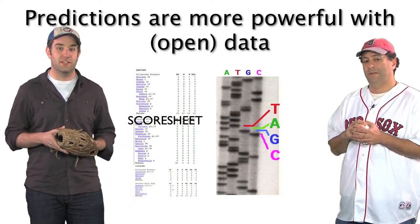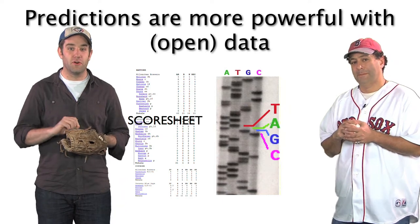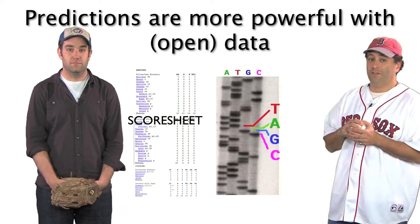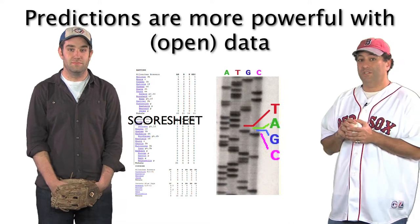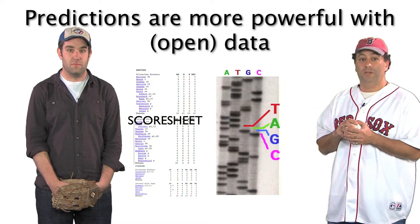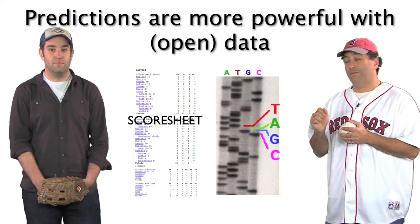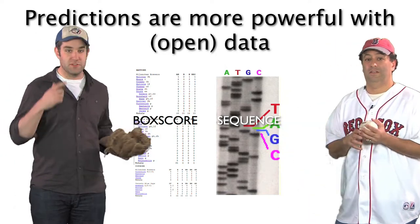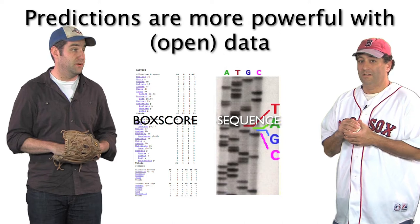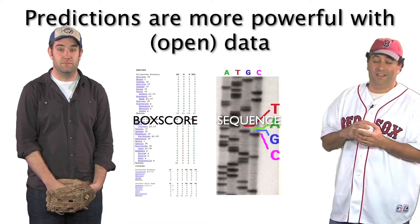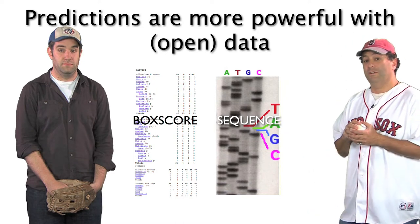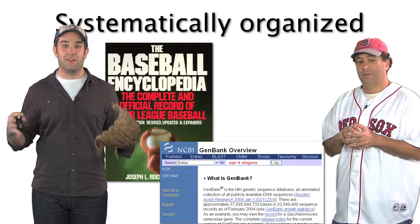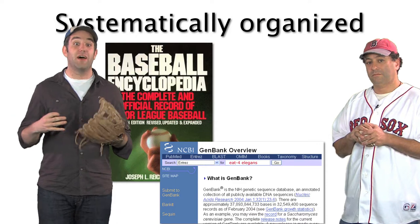Baseball statistics used to be collected at an individual game where people would just keep score on a score sheet. And DNA sequences were obtained by a cumbersome method where you took a piece of DNA, did a bunch of biochemistry, ran it out in a sequencing gel, and recorded the DNA sequence by writing it down on a single piece of paper. Eventually those results would be disseminated — in the case of baseball statistics through a box score in a newspaper, and in the case of DNA sequences printed in a journal article. But it wasn't really until those statistics and that sequencing data became systematically organized that people began to appreciate just how powerful they could be.